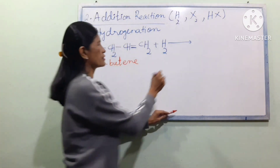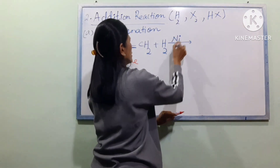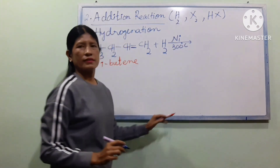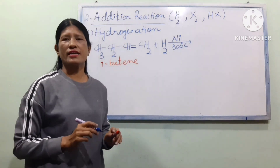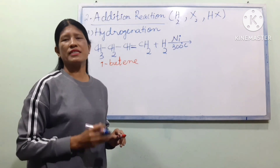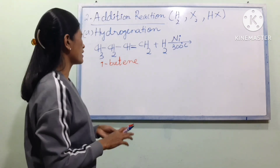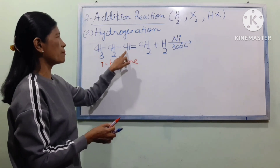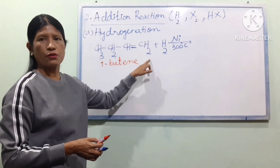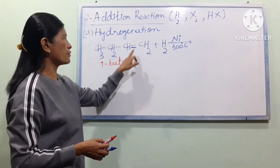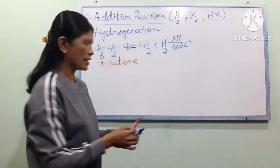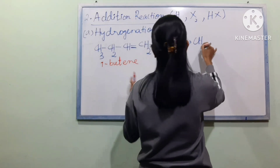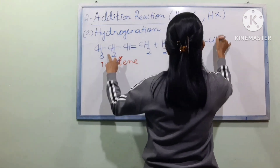In this case, we are going to use a nickel catalyst at 300 degrees Celsius for the hydrogenation reaction.